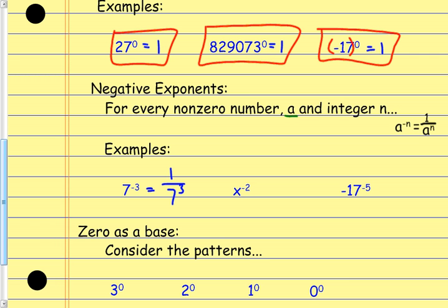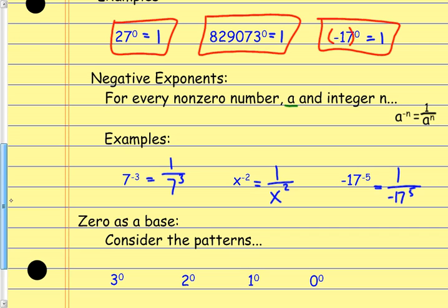Of course I can simplify that by computing 7 to the third power. x to the negative second power is going to be 1 over x to the positive second power — flip it to the other side of the fraction bar and make it positive. Then this last one is going to be 1 over negative 17 to the fifth power. It causes us to flip to the other side of the fraction bar and makes the negative exponent positive.